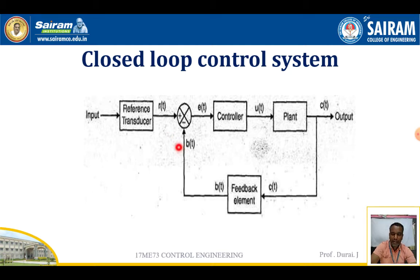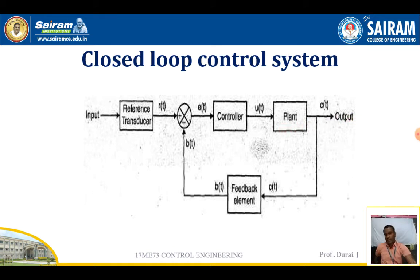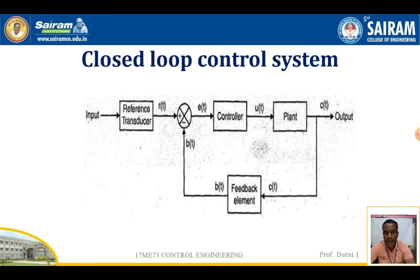According to the reference input system, based on the required signal as well as the error input signal, it provides the input signal to the controller. Then the controller passes it through the process and the output is obtained. This is how the closed-loop system works.